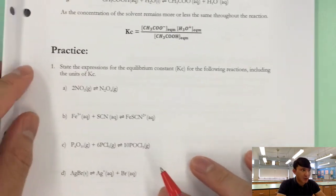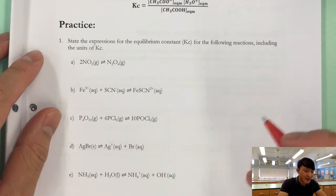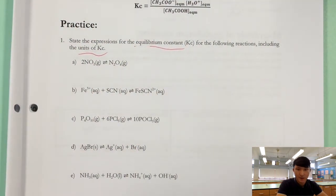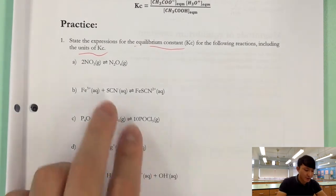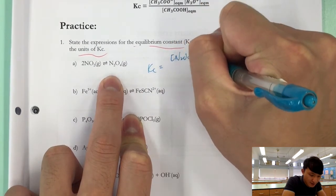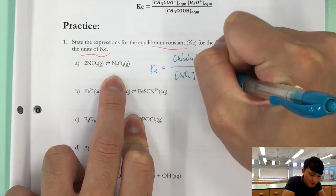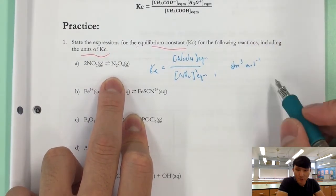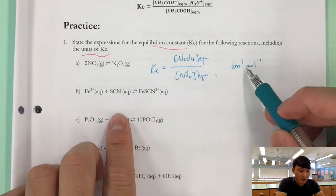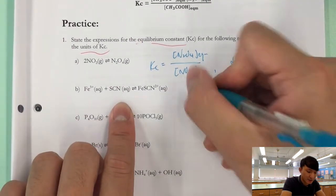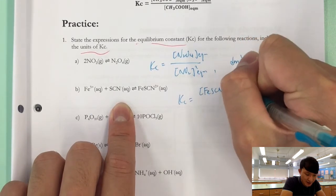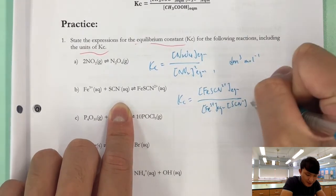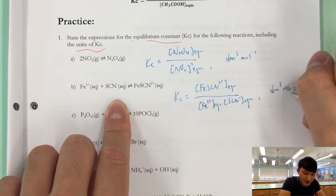Now we have some practice questions — pause the video and attempt them yourself. For question A, Kc equals product over reactant, and the unit is dm³ mol⁻¹. For question B, Kc equals [FeSCN²⁺] over [Fe³⁺][SCN⁻], and the unit is also dm³ mol⁻¹.